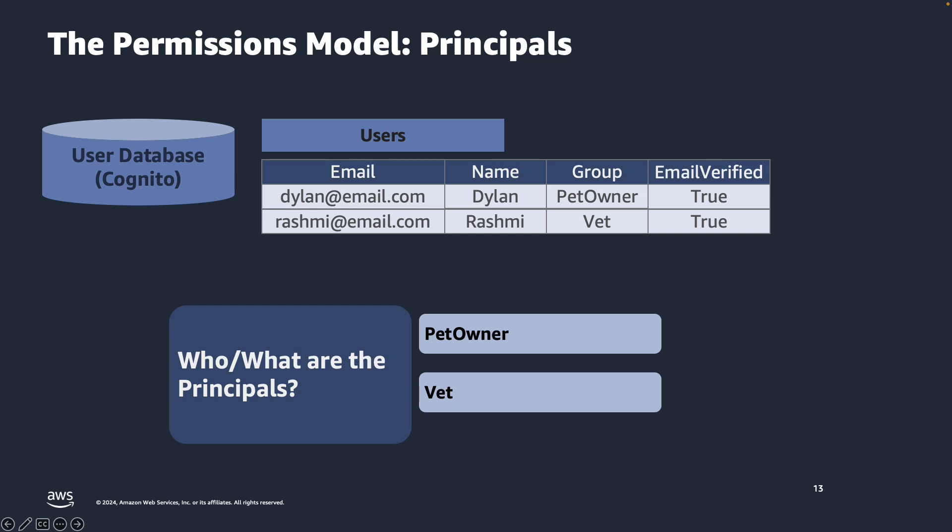We want to write policies about Dylan as a pet owner. As a pet owner, Dylan should be able to view records for only his pet. We also want to write policies for Rashmi as a vet. Identity data is typically packaged in the ID and access tokens that are provided at runtime. In a subsequent video, we will be able to write a Cedar policy that says a pet owner can view records in the database for a pet that they own. We will also be able to test these policies using the test bench included in the Amazon Verified Permissions console.